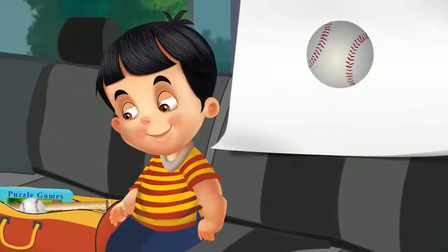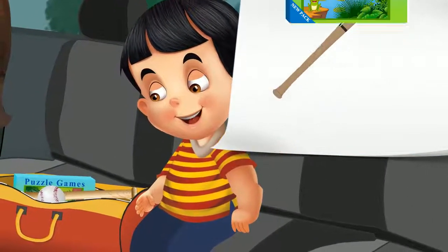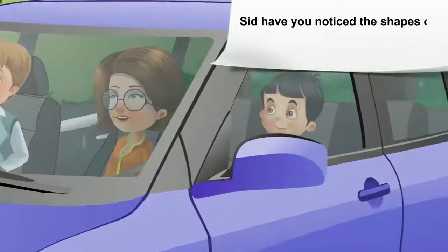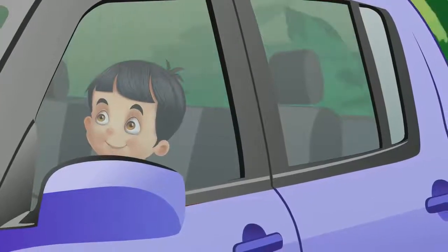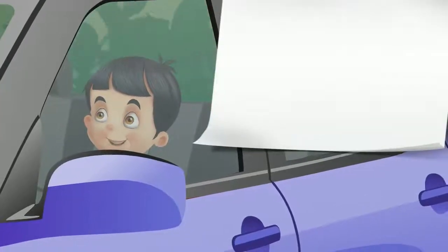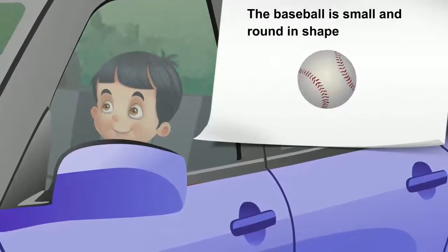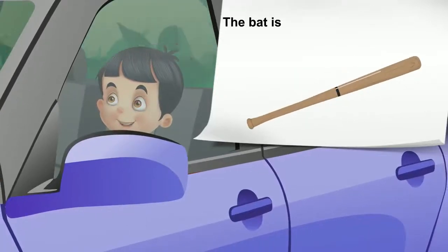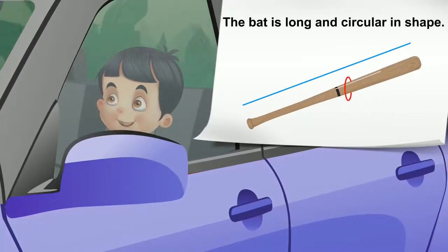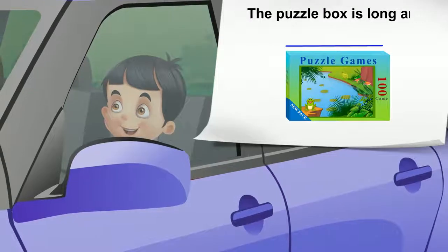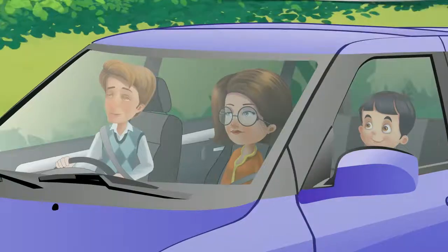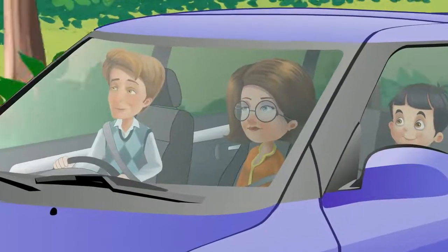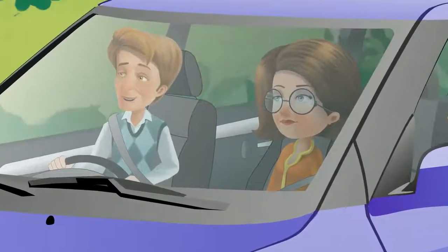I will check the toys — a baseball bat and a puzzle box. Sid, have you noticed the shapes of your toys? Yes, mother. The baseball is small and round in shape. The bat is long and circular in shape. The puzzle box is long and rectangular in shape.